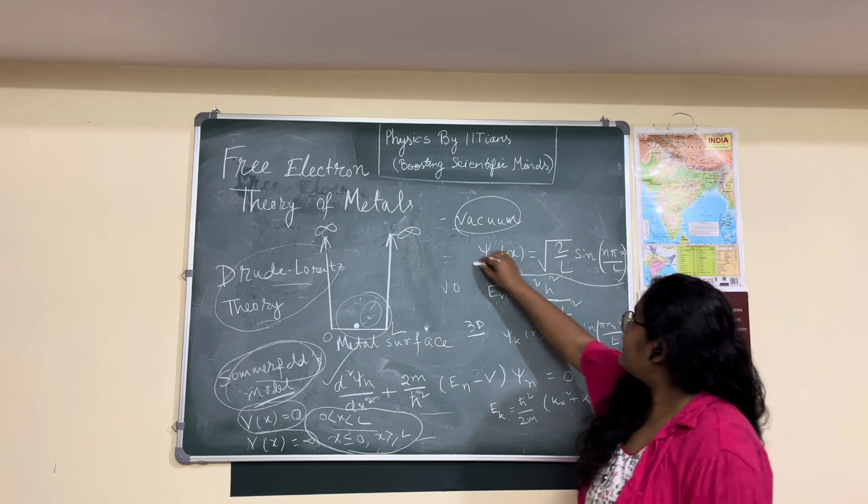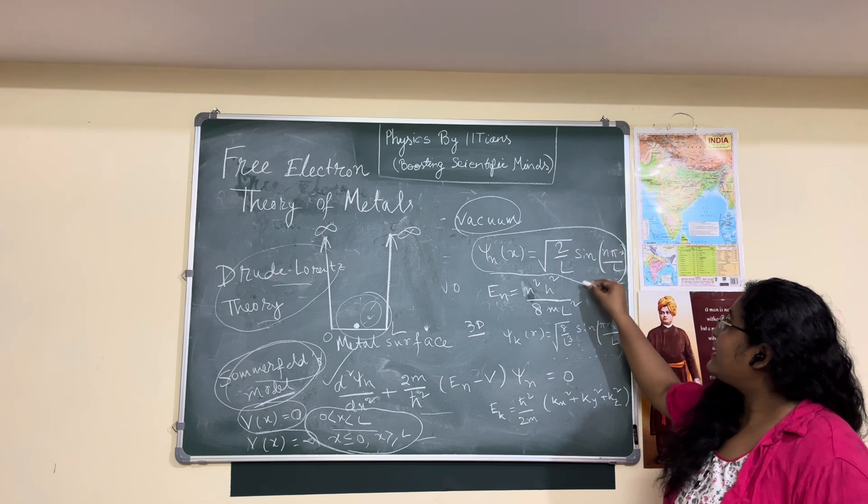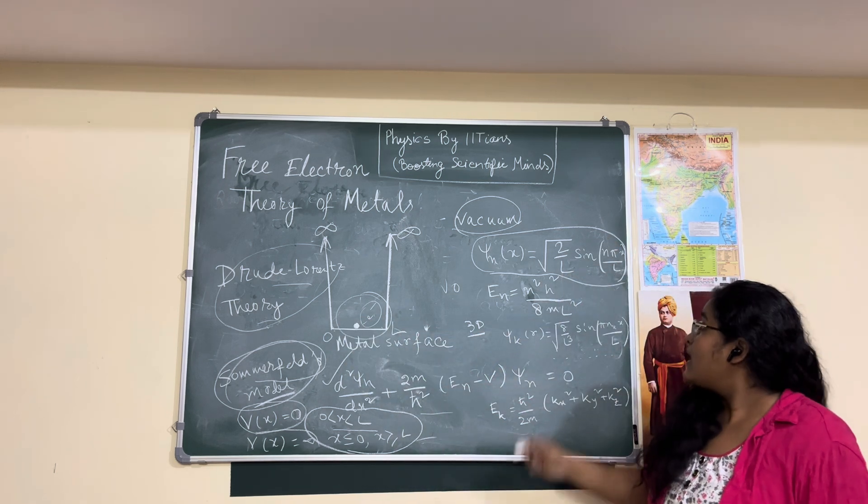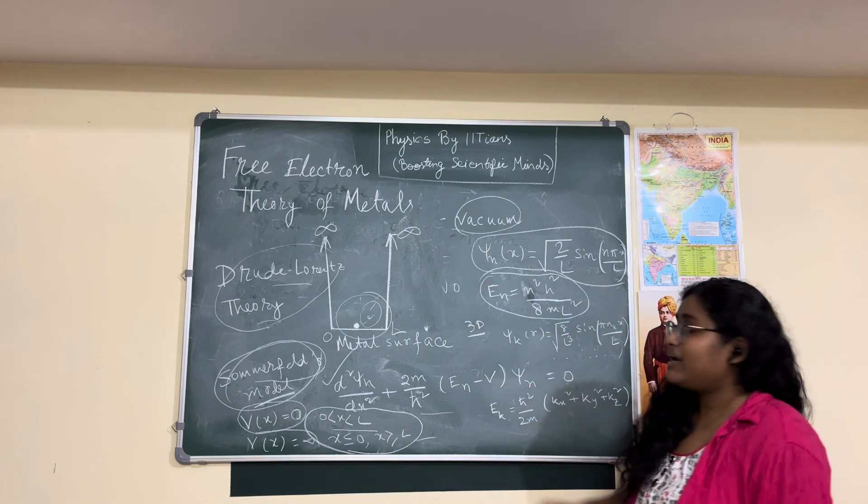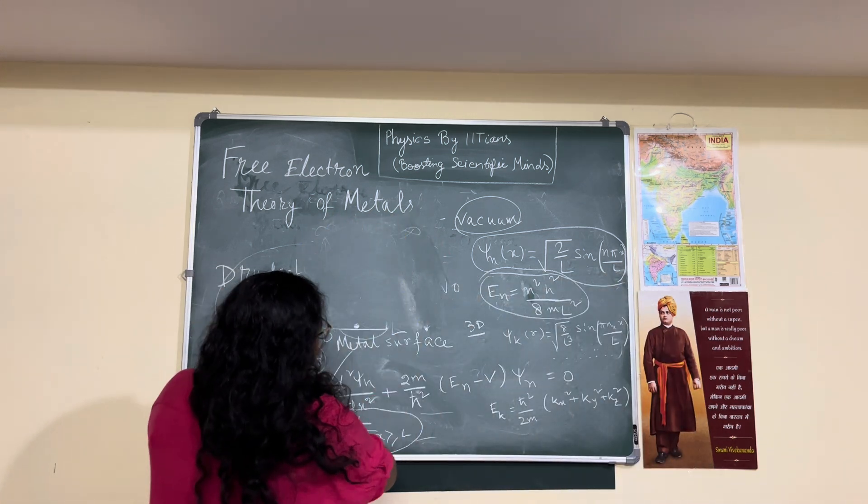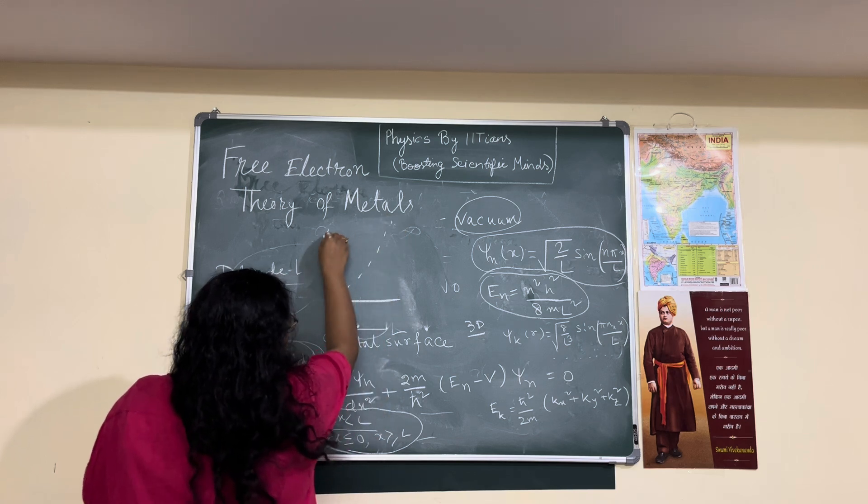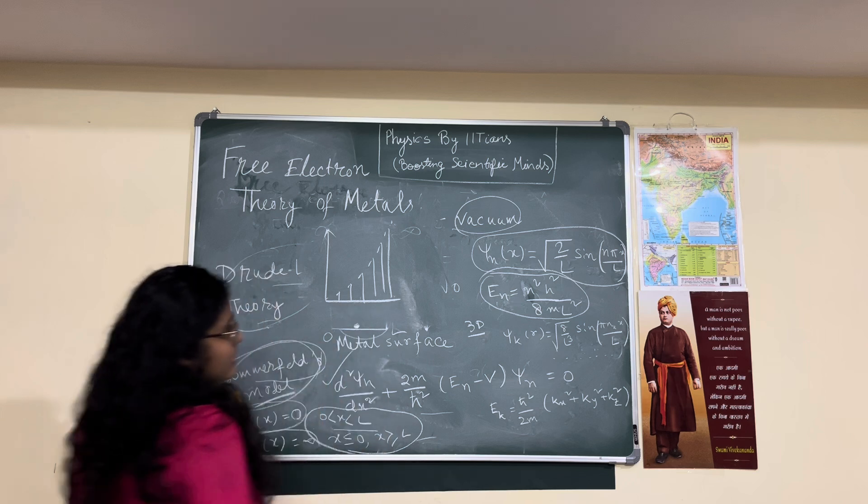So after solving this, we know for the one-dimensional box potential we will have ψ, the wave function value can be written as √(2/L) sin(nπx/L), since we have the length 0 to L. And the energy eigenvalue can be written as E_n = n²ℏ²/2mL².